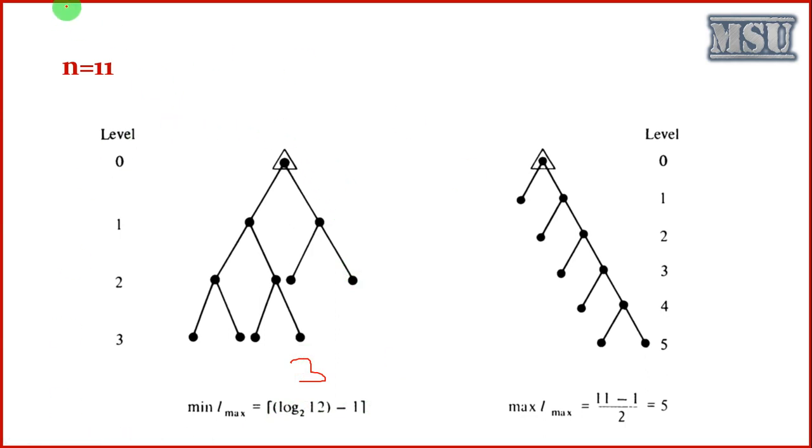To represent a binary tree with 11 vertices, we require 3 levels. And then if I am using maximum number of level needed: 11 minus 1, we require at least 5 levels to represent the max. So minimum number of levels is 3, maximum is actually 5. This is what we are saying as a binary tree.